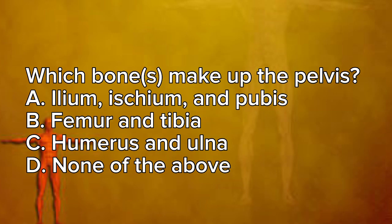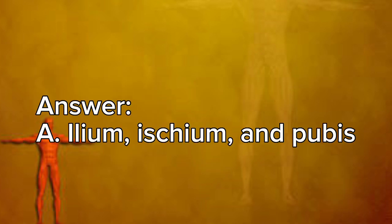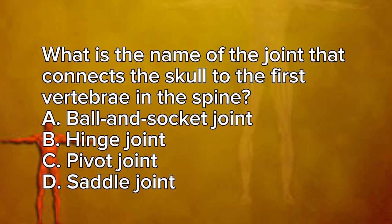Which bones make up the pelvis? A. Ilium, Ischium, and Pubis. B. Femur and Tibia. C. Humerus and Ulna. D. None of the above. Answer: A. Ilium, Ischium, and Pubis.